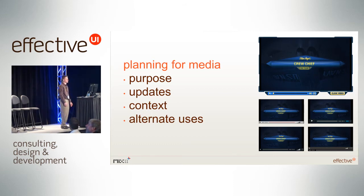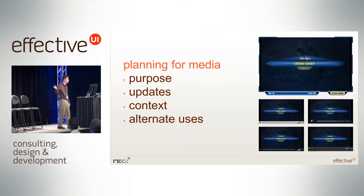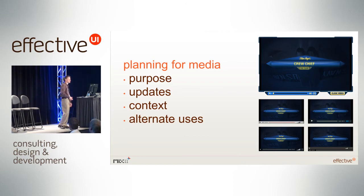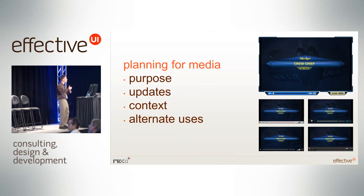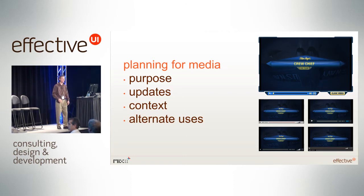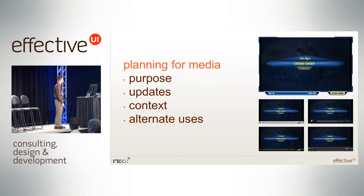Consider alternate uses of the media you produce. The big videos used as players on the site may be kicked out to Vimeo, YouTube, or another media player. As you can see, some of those players have controls overlapping the bottom of the video — and a lot of times in interviews you may have somebody's name strapped down there. If player controls obscure that, that's a problem. So think about where else your content might end up.